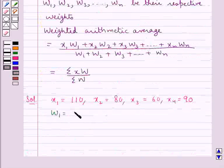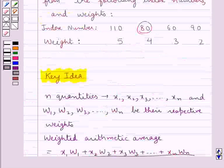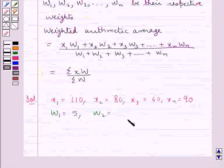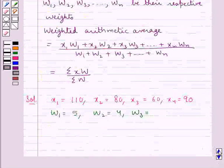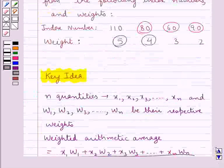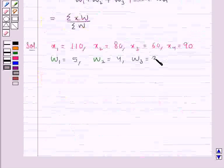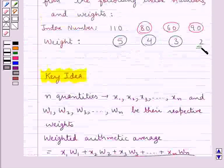then w₂, that is the weight for the index number 80, is 4, then w₃, that is the weight for the index number 60, would be 3, then w₄, that is the weight for the index number 90, is 2.